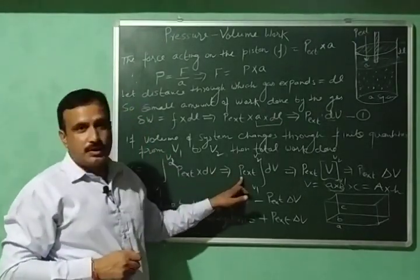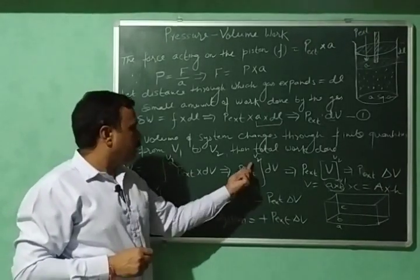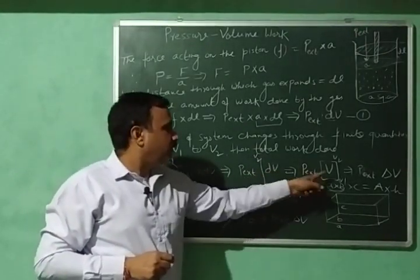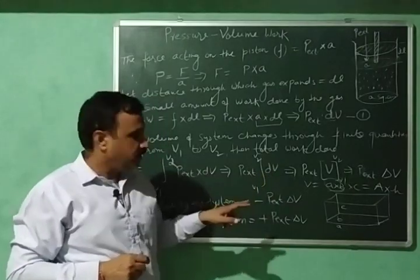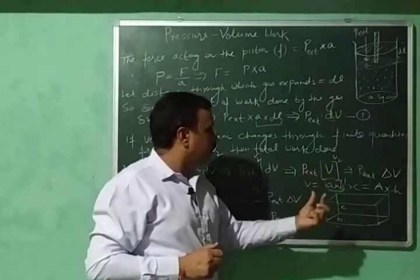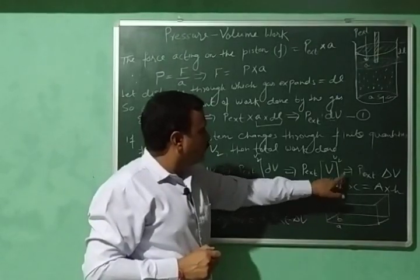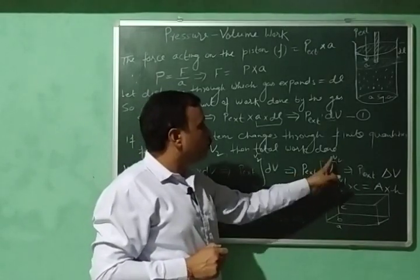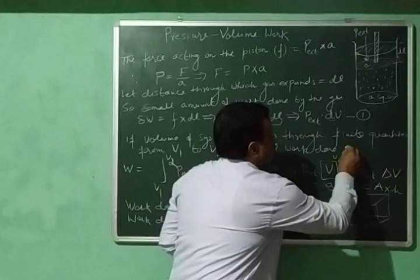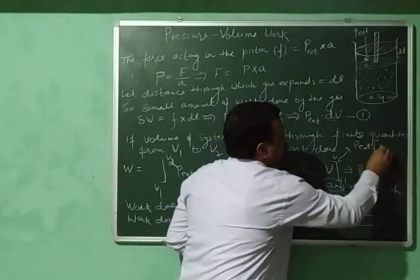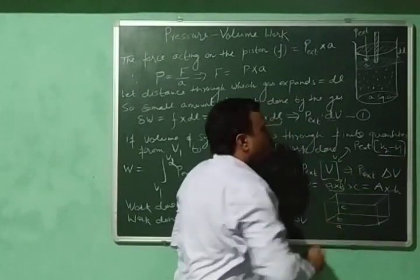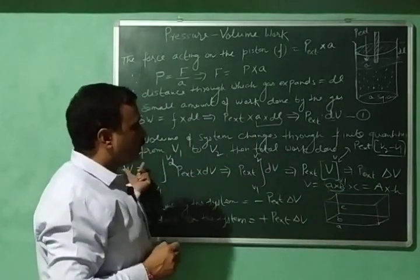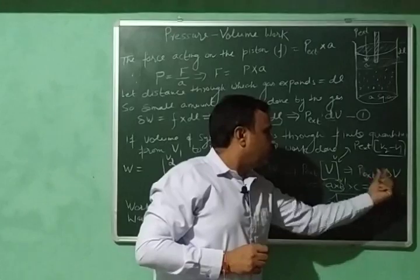Since external pressure is constant, it comes outside the integral sign, leaving the integral of dV from V1 to V2. Integrating dV gives V, so we have P external into V evaluated between V1 and V2. Substituting the limits gives P external into (V2 minus V1), that is P external into delta V. So the total work done equals P external into delta V.